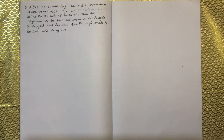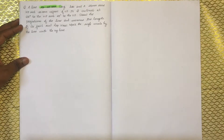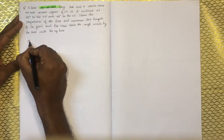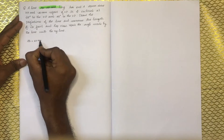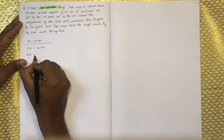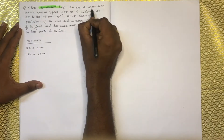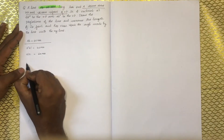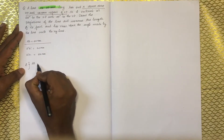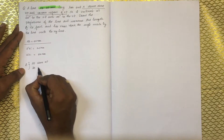This is line AB, 60mm long. We are going to see the line AB which is 25mm above HP and 30mm in front of VP.